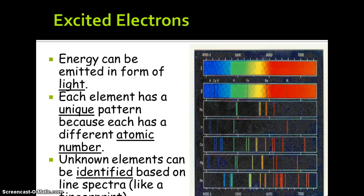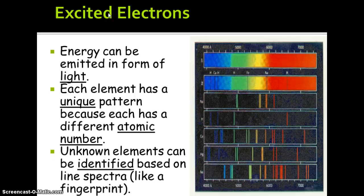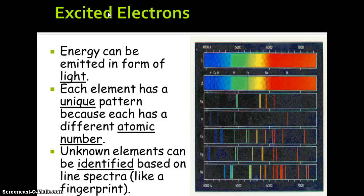Energy can be emitted in the form of light. Each element has a unique pattern because each has a different atomic number. In neutral atoms, because you have a unique atomic number, you have a unique number of electrons, and they act differently. That's how you get your unique spectra pattern.